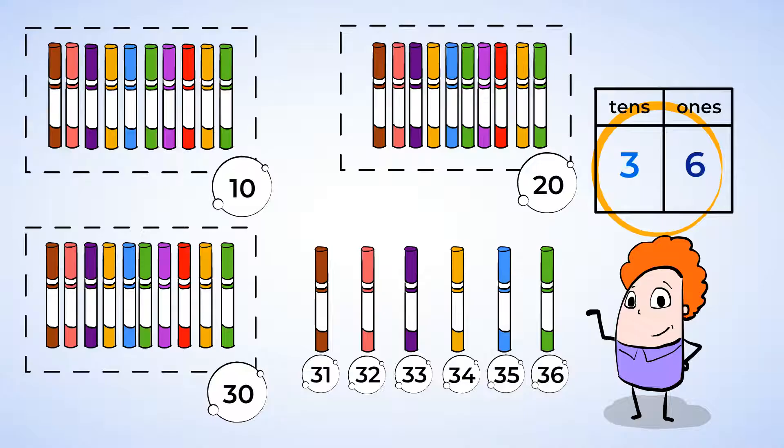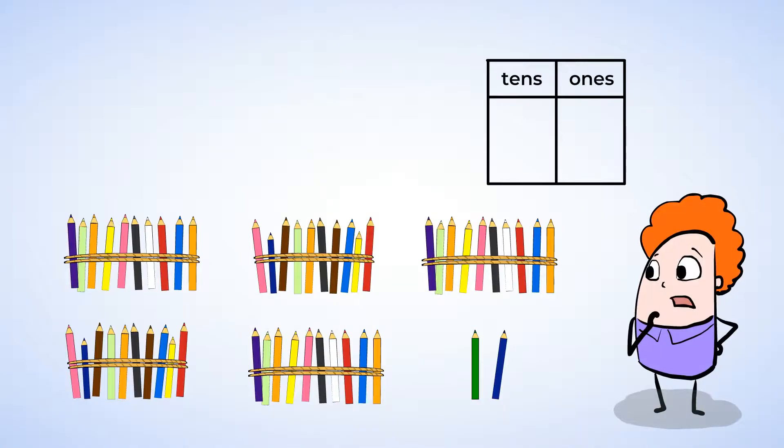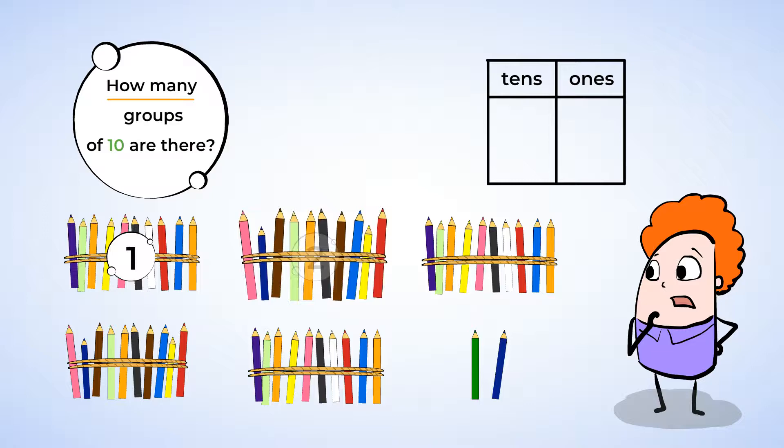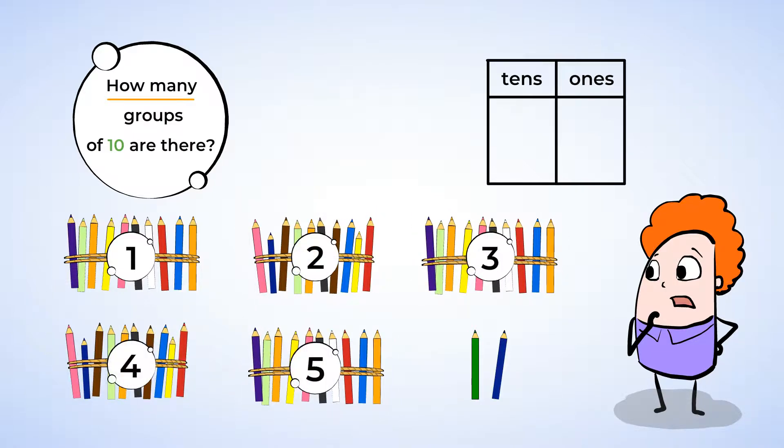You're doing a great job counting 10s and 1s. And now, last but not least, let's count the colored pencils. Wow, there are a lot. How many groups of 10 are there? 1, 2, 3, 4, 5. There are 5 groups of 10, or 5 10s.